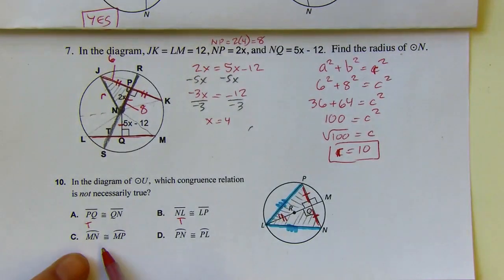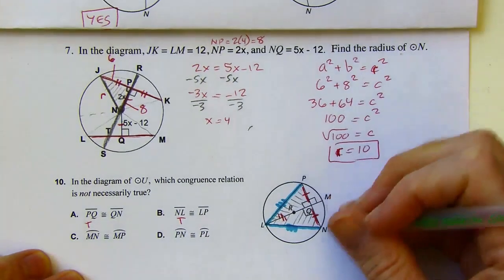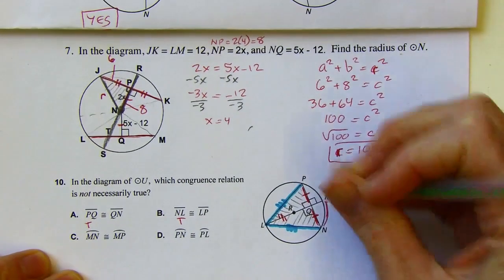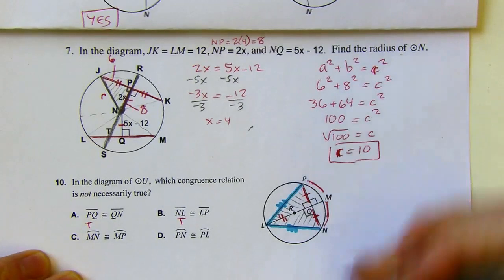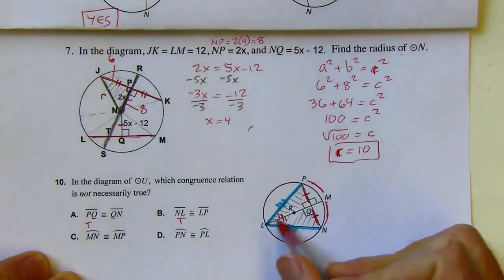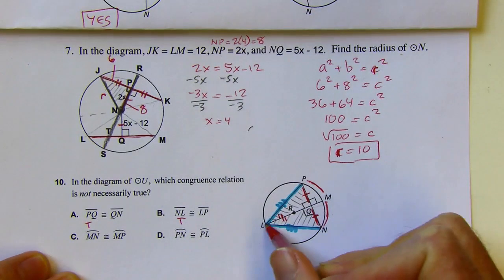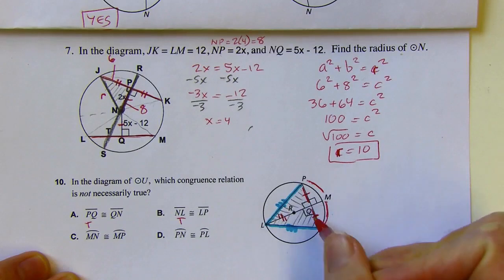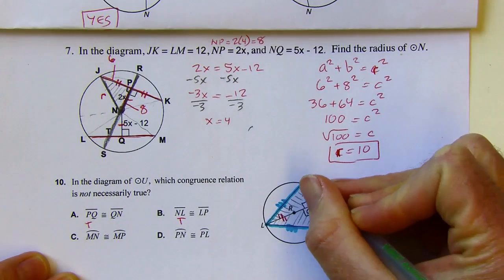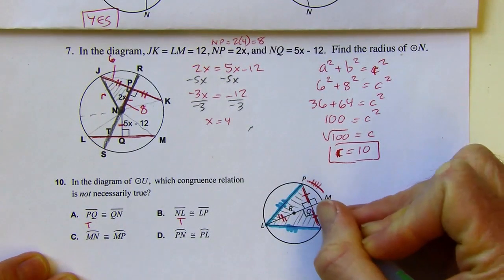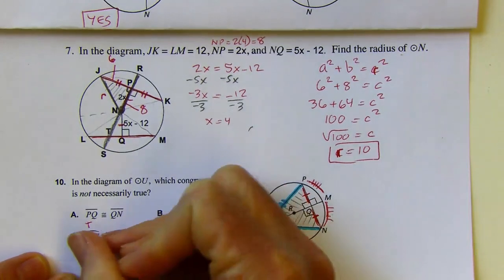Let's look at part C. Arc MN is congruent to arc MP. Arc MN is right here. Arc MP is right here. Now, this diameter bisects this chord. And since the diameter bisects that chord, it's also going to bisect the related arc. So that is definitely true as well.